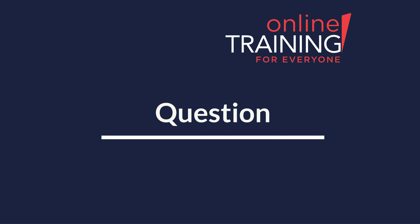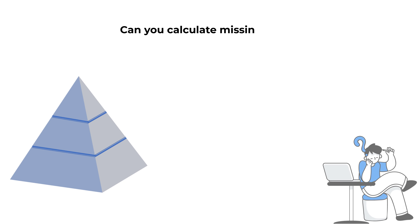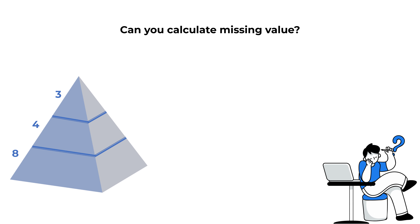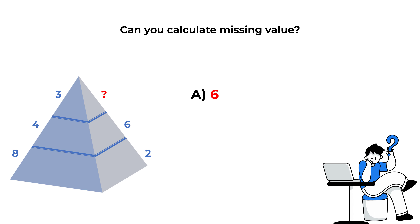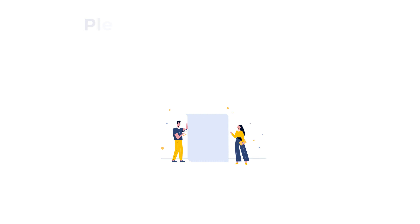And now here's a practice question for you. You're presented with a triangle broken into 3 equal horizontal parts. On the left side, you see numbers 8, 4, and 3 going from bottom to top. On the right side, you see numbers 2, 6, and one number is missing. You need to select the missing number from four choices: Choice A, 6; Choice B, 10; Choice C, 7; Choice D, 2. Give yourself time to solve it, and post your answer in the comments.